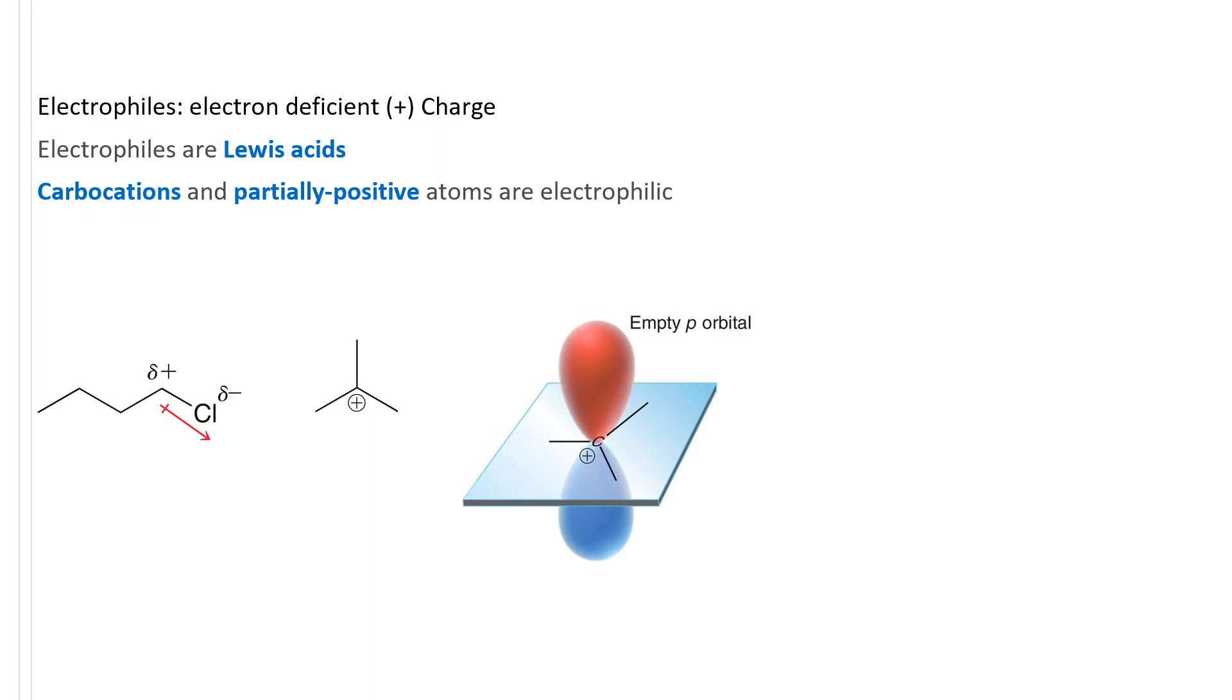Electrophiles are electron deficient. They have either a full unit of positive charge or partial positive charge. They are Lewis acids, which means they are capable of receiving a sigma bond. So, don't be looking for lone pairs on the electrophile. Carbocations and any partially positive atom are electrophilic. For instance here, the alpha carbon has a partial positive charge due to inductive effects from chlorine.